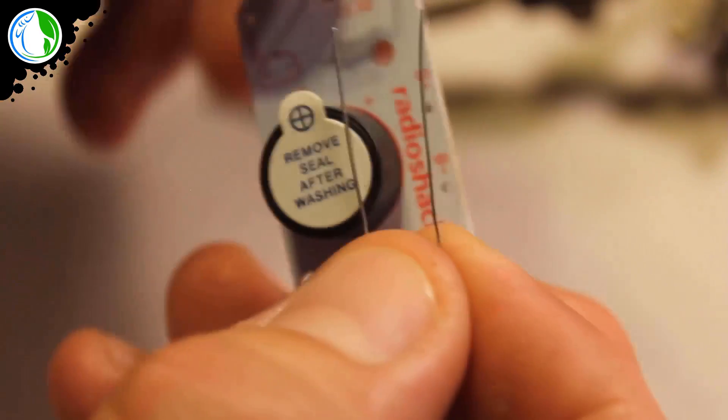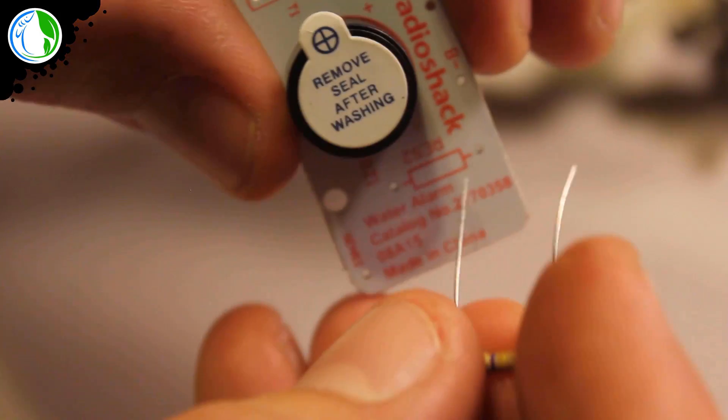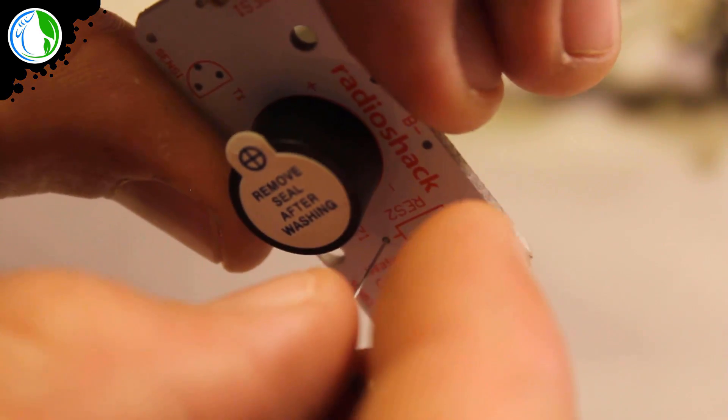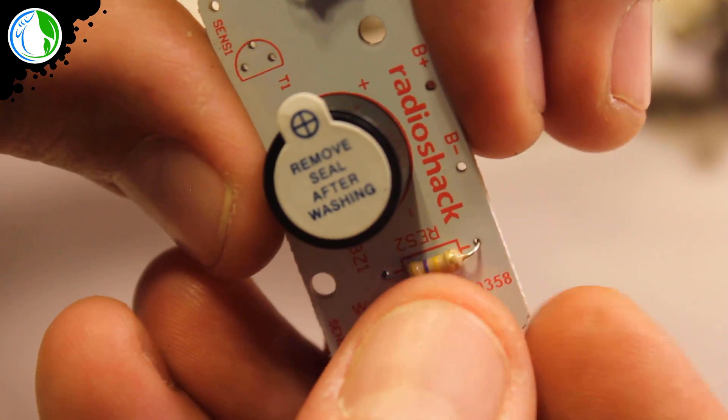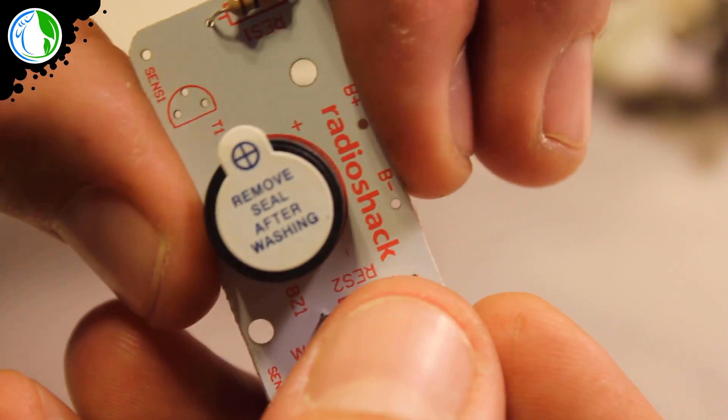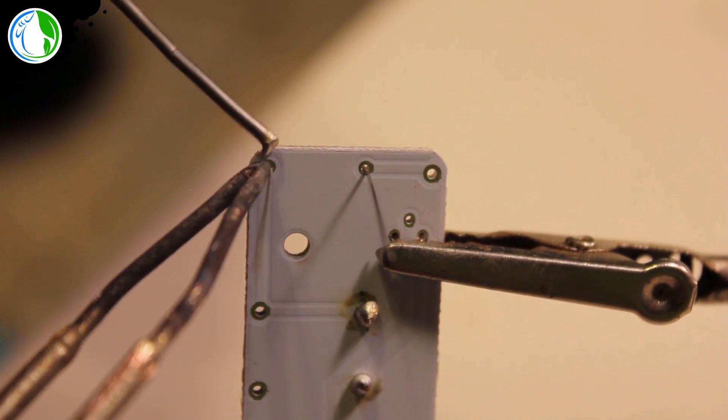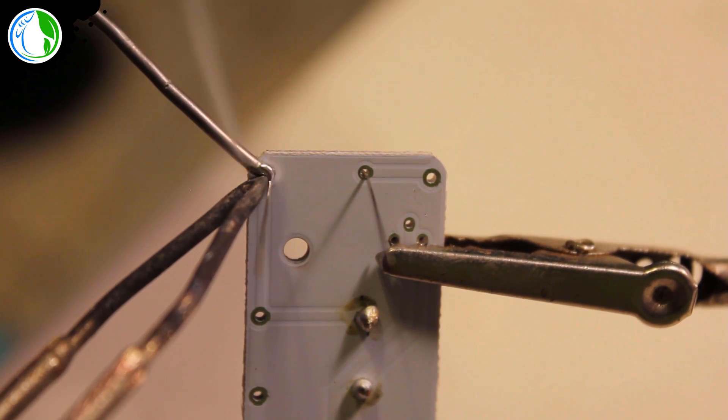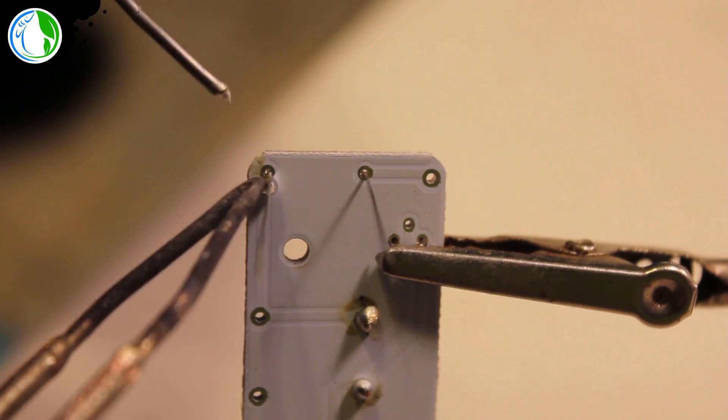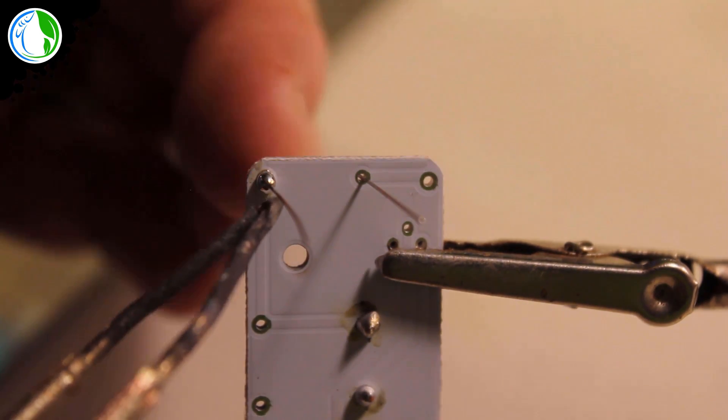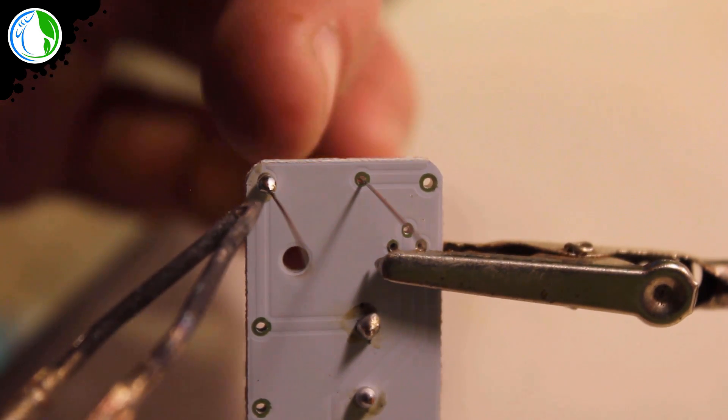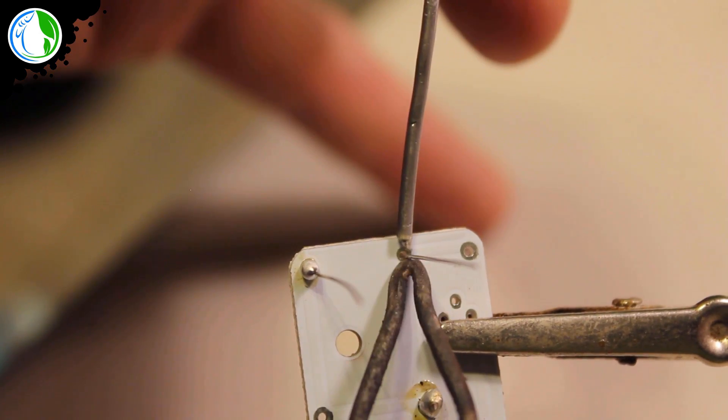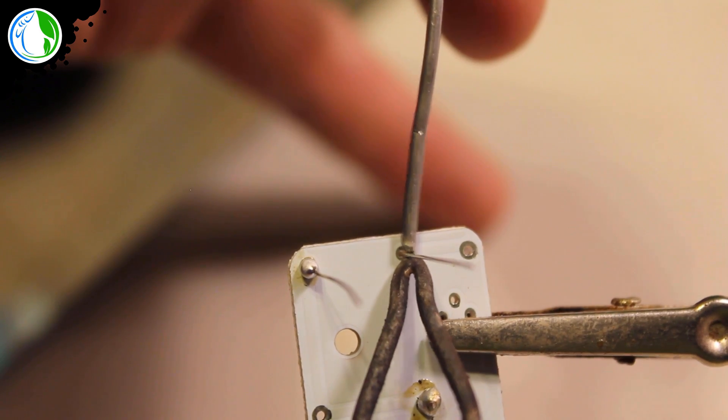Keep in mind resistors are not polarized so they can actually be inserted either way. Now we can go ahead and solder the resistors to the circuit board. Now remember guys, don't solder like I am. Keep your circuit board facing up on a level plane so your solder doesn't want to fall off the board.